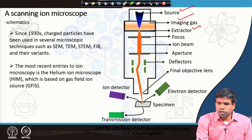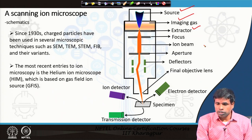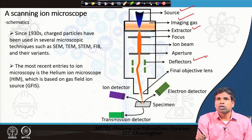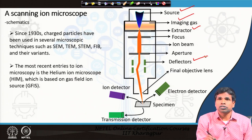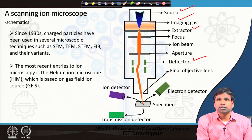Then the ion beam comes through, and we use different apertures — just as in the electron microscope, apertures are used to reduce the aperture angle and control the beam current. We also have deflector coils that allow us to scan the ion beam across the surface in a raster manner. Then we have the final objective lens, and the ion beam strikes the surface of the specimen.